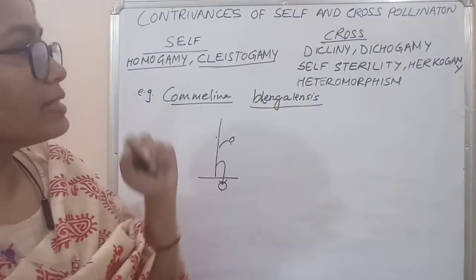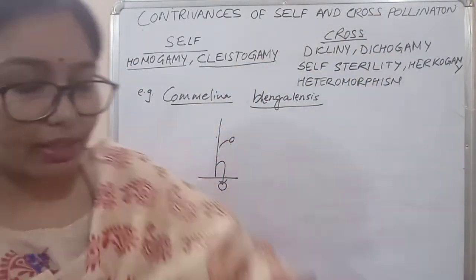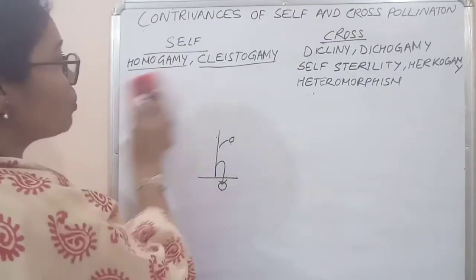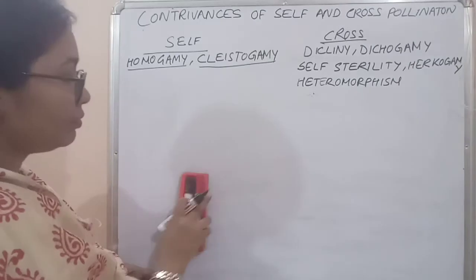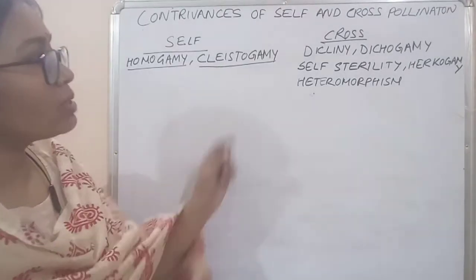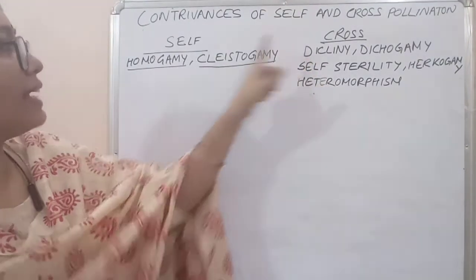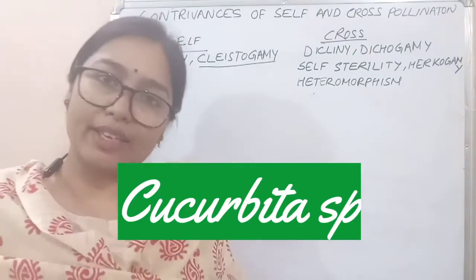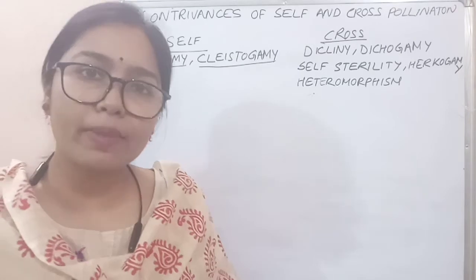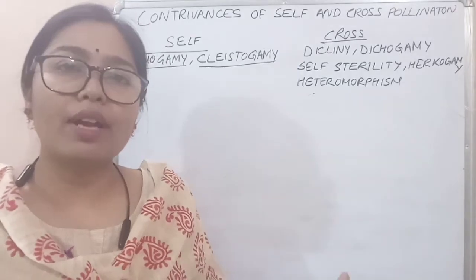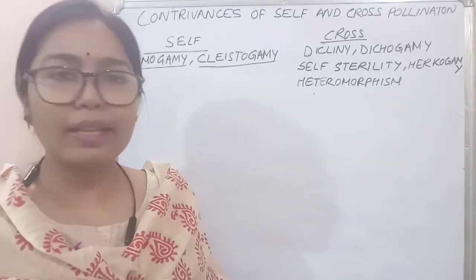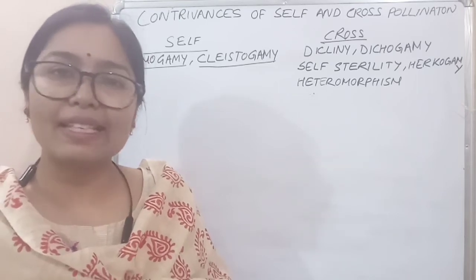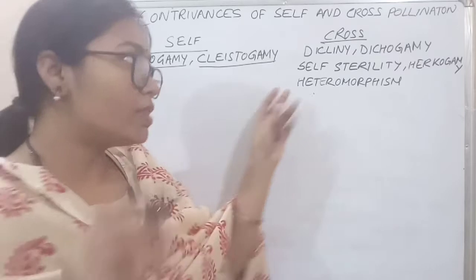Now, what are the conditions which favor cross-pollination? The first one is dicliny. Dicliny means the flowers are unisexual. That is the most common phenomenon — where the flowers are either male or female, they cannot do self-pollination. So that is a common factor favoring cross-pollination.